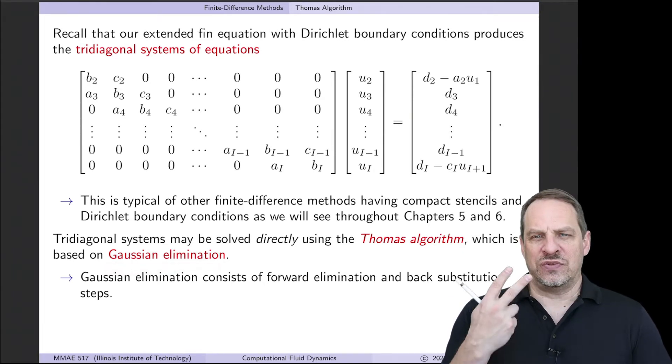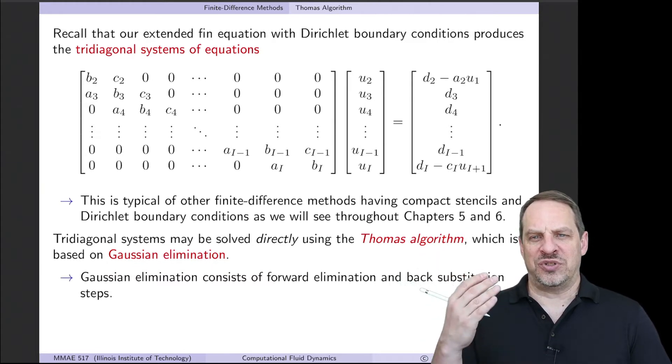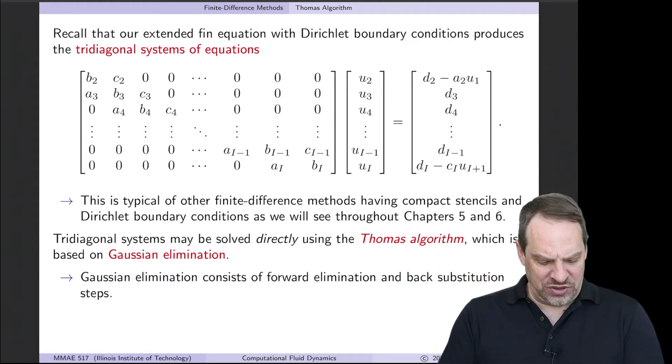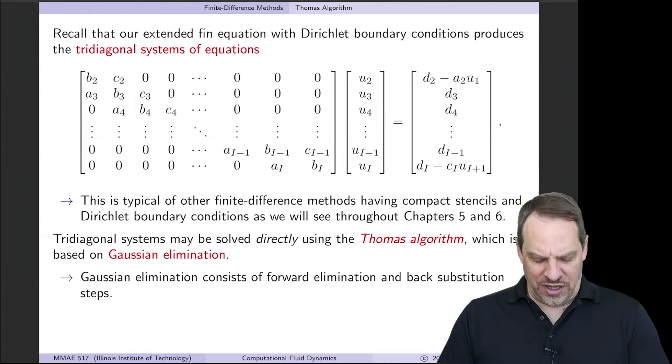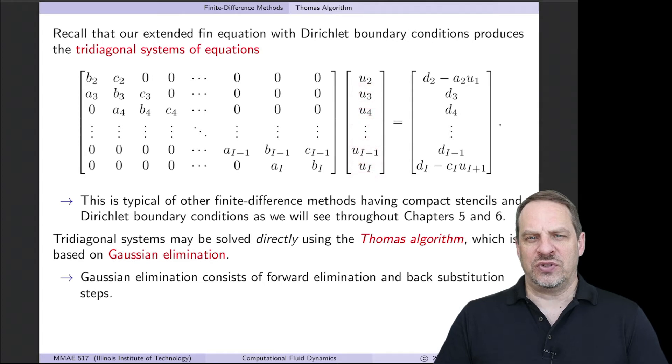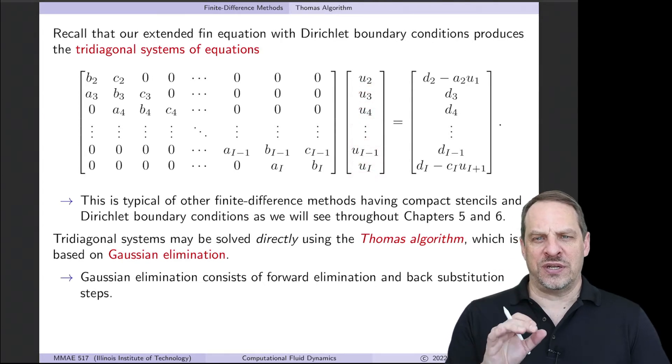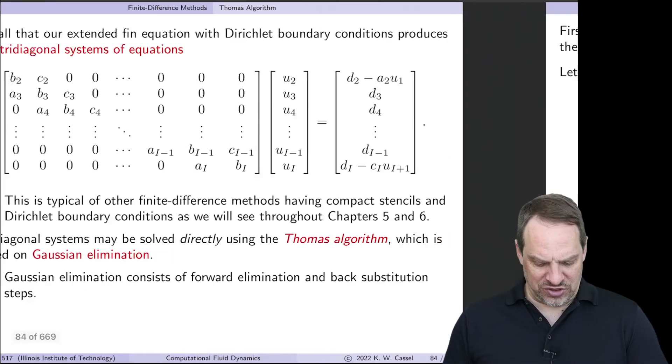So we'll do the Gauss elimination. It consists of two steps, the forward elimination and the back substitution. The forward elimination is to get rid of the A's and then make all of the B's 1. And then the back substitution will be to get the solution backwards for the values of U. So let's just walk through those. It's just Gauss elimination applied specifically to a tridiagonal system of equations.